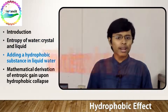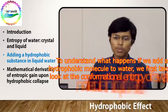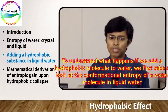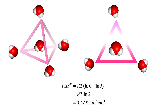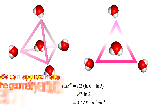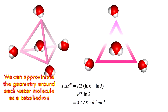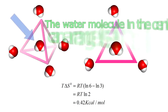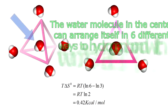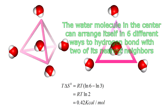To understand what happens if we add a hydrophobic molecule to water, we first take a look at the conformational entropy of a water molecule in liquid water. With each water molecule surrounded by four nearest neighbors, we can approximate the geometry around each water molecule as a tetrahedron. The water molecule in the center can arrange itself in six different ways to hydrogen bond with two of its nearest neighbors.